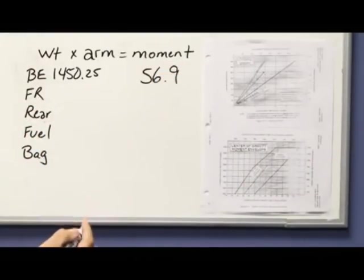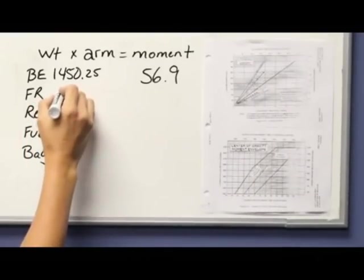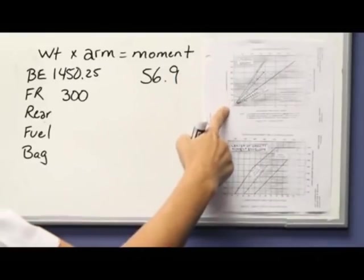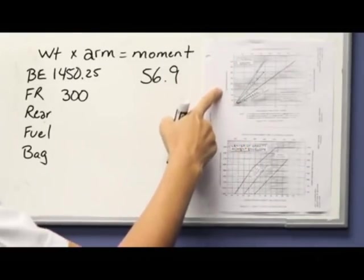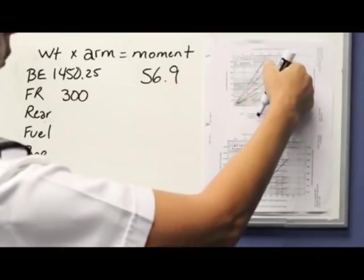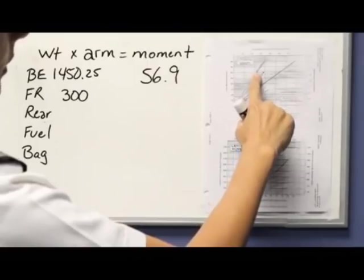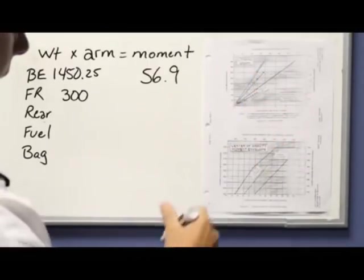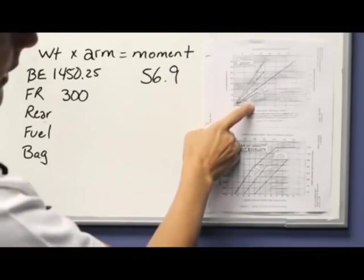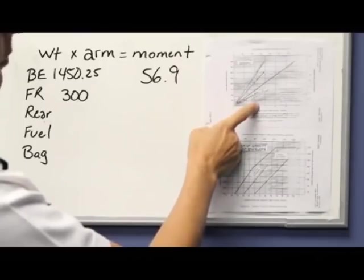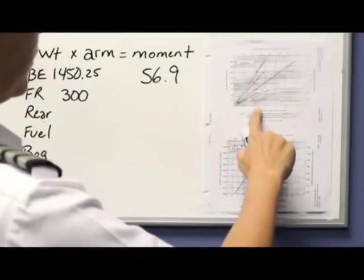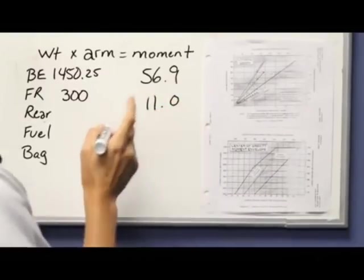Now the next one is our front seat passengers. Let's say that between the flight instructor and the student, the weight was 300 pounds. Now I need to get the arm or the moment. In order to get my moment, by using this graph, it calculates the arm for you. All I have to do is use this weight scale. I go up to 300, and then I go across. This first line is labeled pilot and front passenger. So if I go to 300 pounds and go straight down, then I'll see what my moment is. Now be careful—pay attention—because if this is 10 and this is 15, each slash is worth 2. So it's 10, 10.5, 11, 11.5, 12, and so on. So it looks like 300 goes over two lines, so I would call that moment 11.